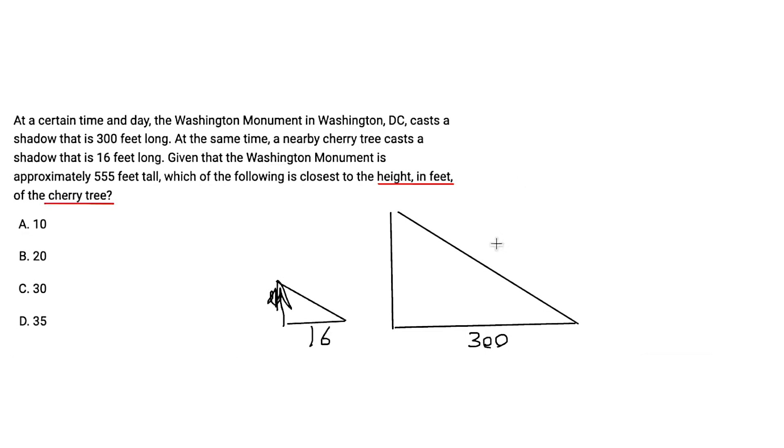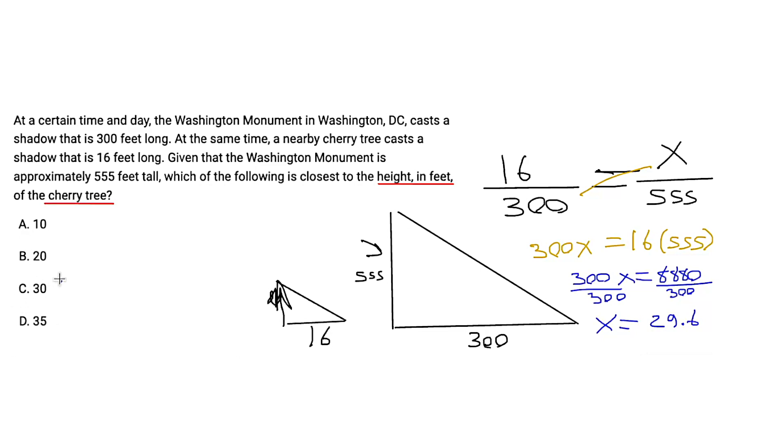Similar triangles, meaning they are different in size, but they have the same angles and they are proportional. The small triangle here is 16 out of 300 of the big triangle. Since it's telling us that the Washington Monument is 555 feet tall, we're going to stick that in the denominator. We can just cross multiply. 300x equals 16 times 555, which is 8880 divided by 300. X equals 29.6. Which of these answers is closest to 29.6? 30.